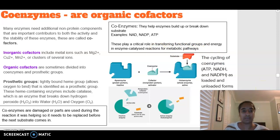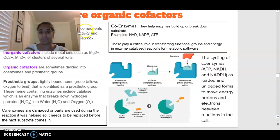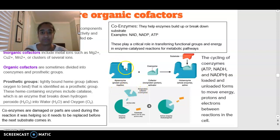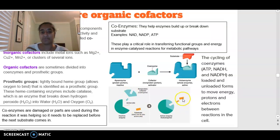In terms of the cycling of coenzymes, they are moving energy as protons and electrons between different reactions in a cell. Cofactors fit into an enzyme and help it work better by allowing the substrate to fit in better at the active site. When a non-protein cofactor or coenzyme is added to an inactive enzyme, the substrate is able to fit in and the enzyme can do its job.